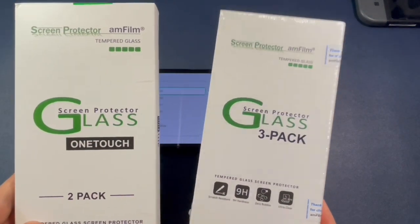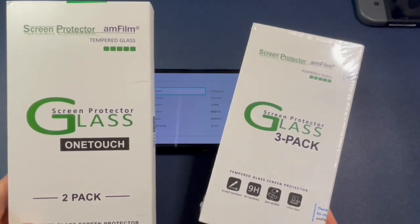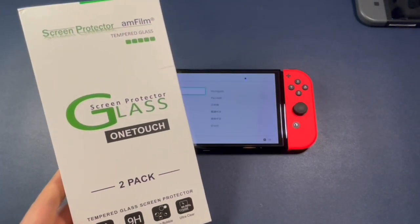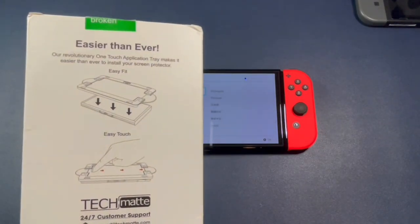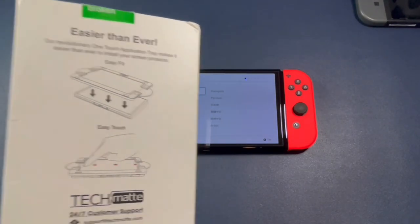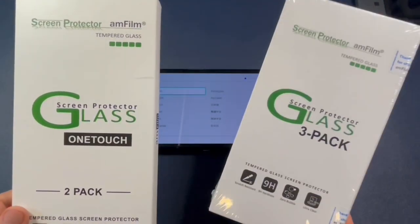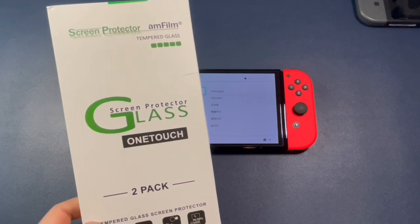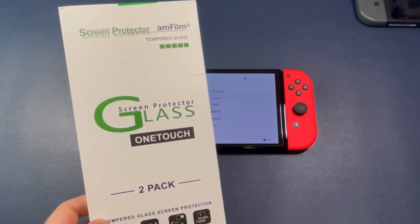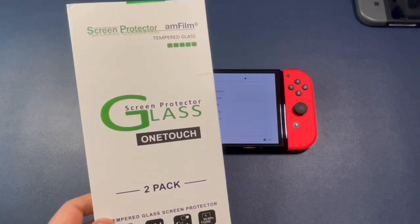there is a three-pack of these without the one-touch applicator. And then for $5 more, there is a two-pack that comes with two one-touch screen applicators. So it's up to you. Do you want to pay 10 bucks for a three-pack and take the risk? Or do you want to spend five bucks more and feel like you're on vacation while you're putting on your Nintendo Switch screen protector?